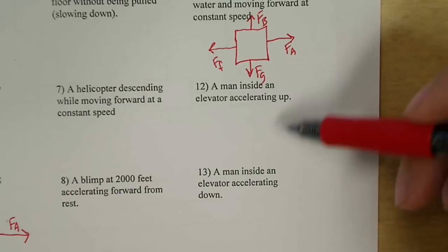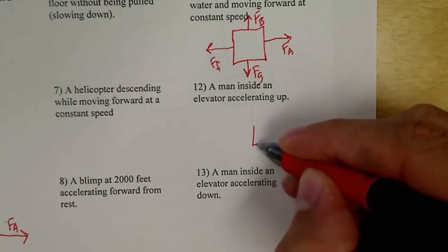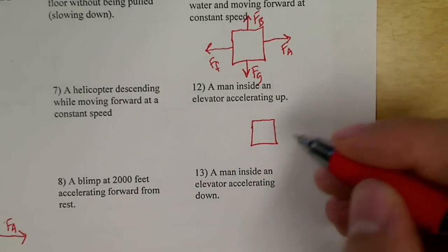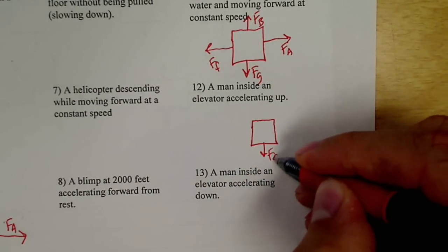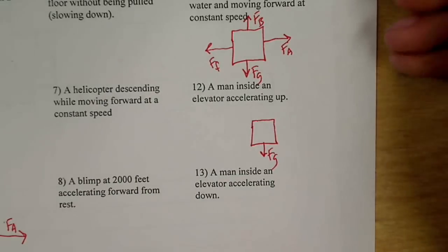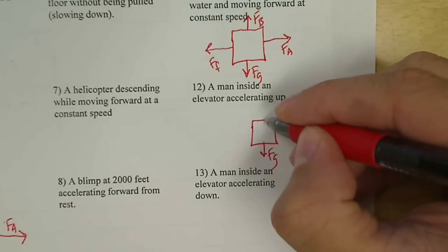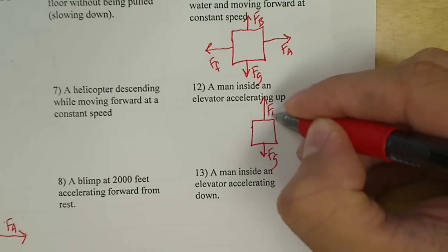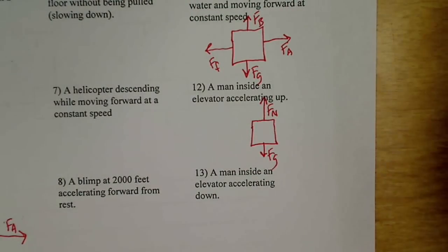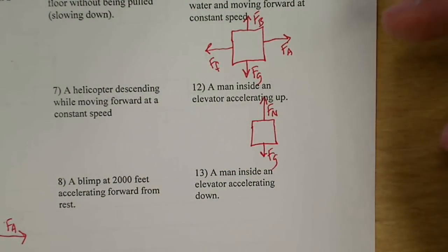So if we have a man inside an elevator accelerating up. There's still the force of gravity. If the whole elevator is pushing up, that means the floor is pushing up on him. That's a normal force. And it's going to be larger than the gravitational, because the elevator is pushing him up.